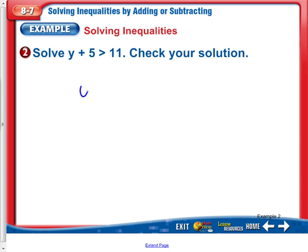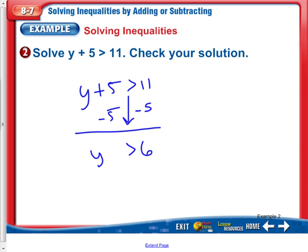For example 2, we'll copy this down. Y plus 5 is greater than 11. Subtract 5 from both sides. Whatever you do to one side, you must do to the other. So Y is greater than 6. Again, notice the inequality comes down the exact same way. It does not change or flip at all.